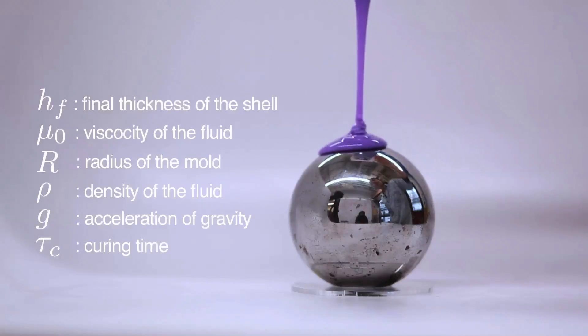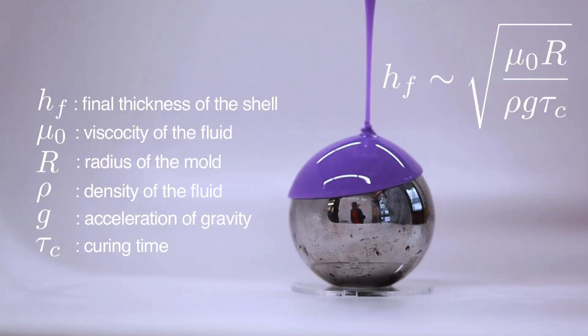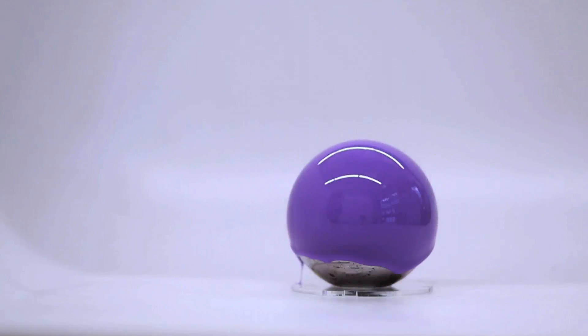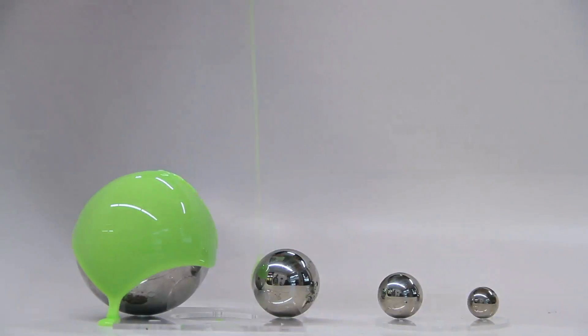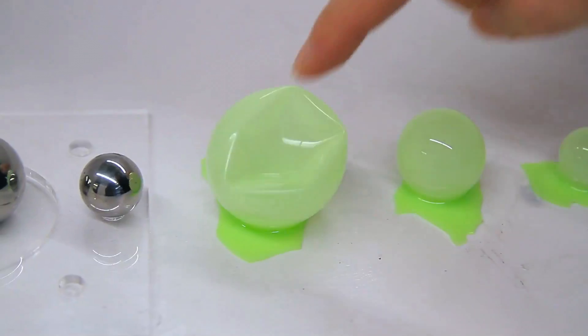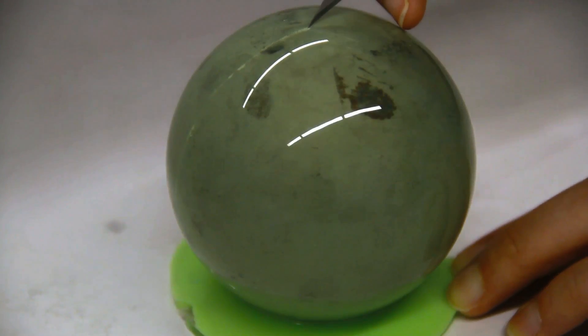Using a set of variables, the researchers are able to predict precisely how thick the polymer shell will be once it's in its final state. For example, they know the final shell will be thicker for larger values of the radius of the mold or the initial viscosity of the polymer. The shell will be thinner if the polymer takes longer to cure. With their technique, the researchers can readily and accurately predict this final shell thickness based on design parameters.